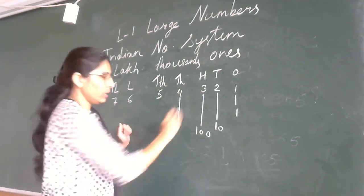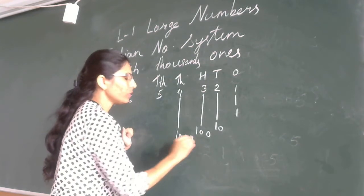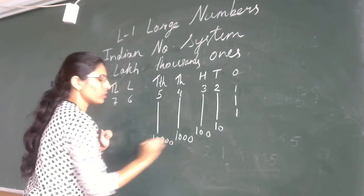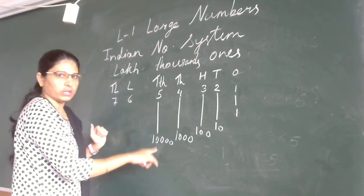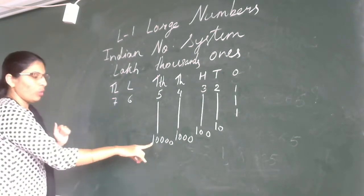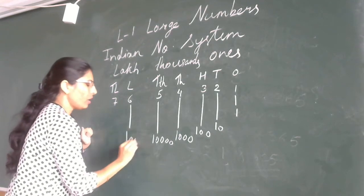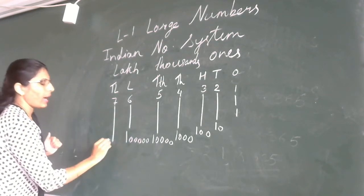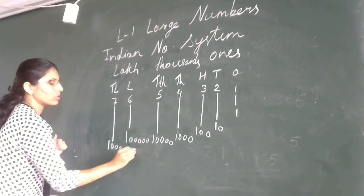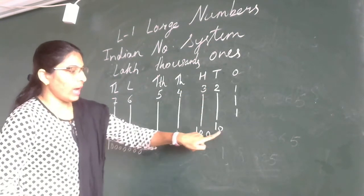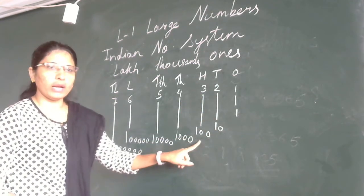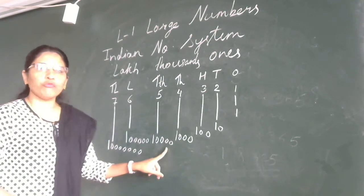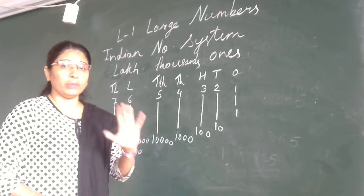In the thousands period: thousands has one followed by three zeros — a four digit number, so place value is one thousand. Ten thousands has one followed by four zeros, so its place value is ten thousand. In one lakh, there is one followed by five zeros, so place value is one lakh.